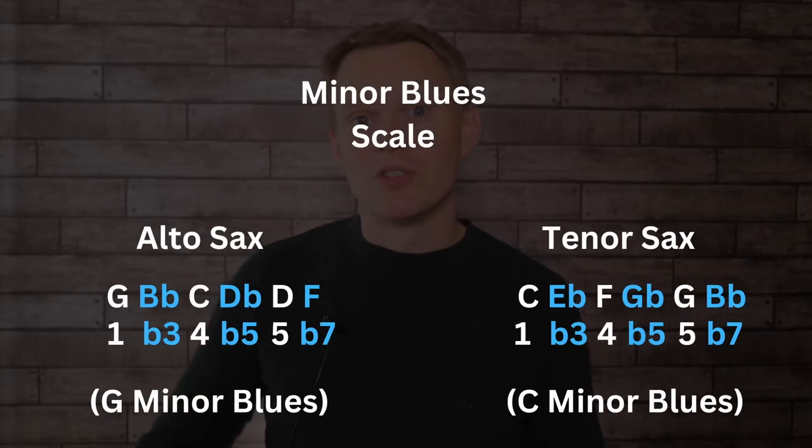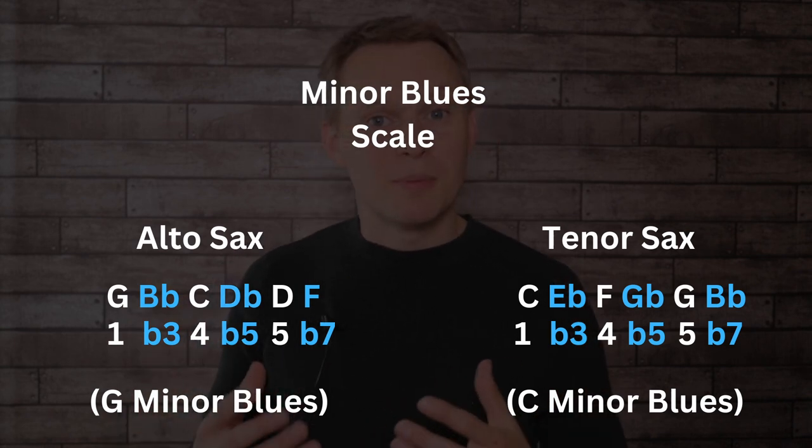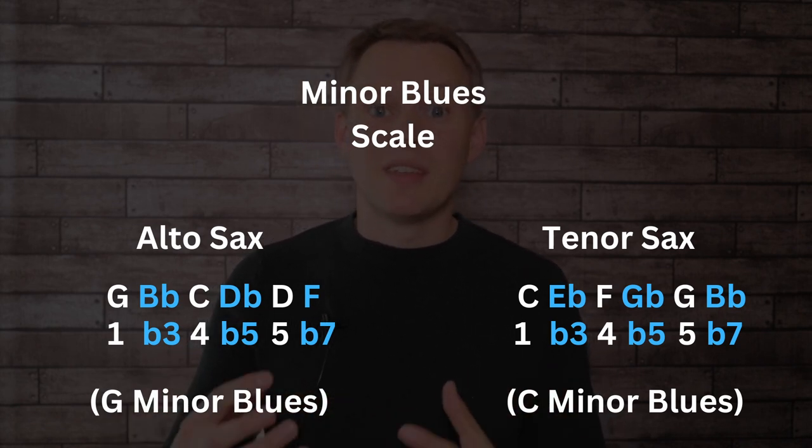The minor blues scale is built by using the first, flat third, fourth, flat fifth, fifth, and flat seventh. It's because of those scale degrees — like the flat three, the flat five, and the flat seven — that gives it its darker, bluesier sound. If you'd like to learn your major and minor blues scales in all 12 keys, I've got a link to that video down below in the description. So here's this example blues study using this minor blues scale phrase. We're still playing a 12-bar blues in the key of G for altos and C for tenors, but you'll hear how it sounds much darker and much bluesier because we're using this scale instead.